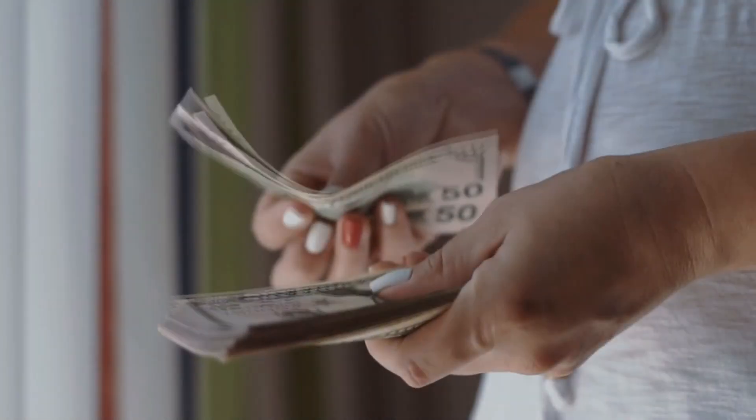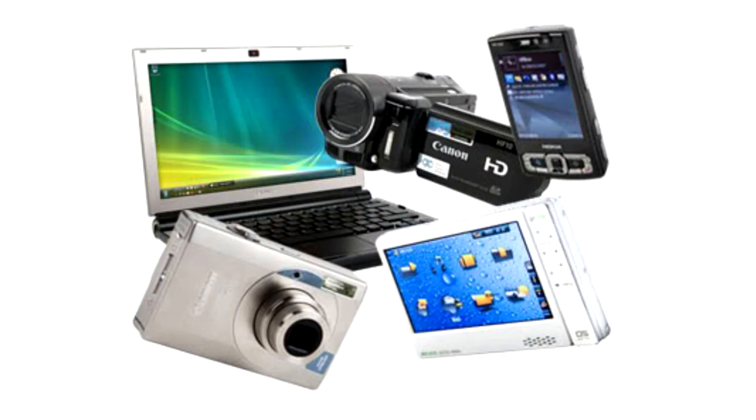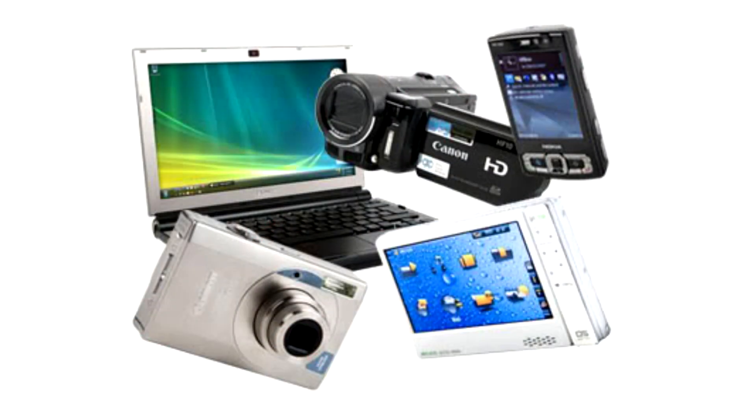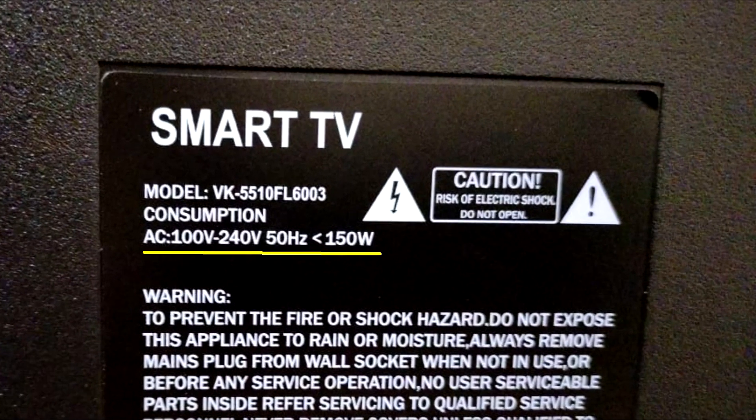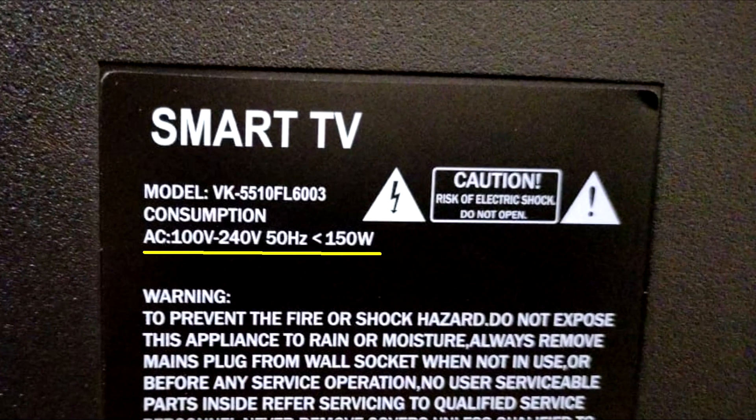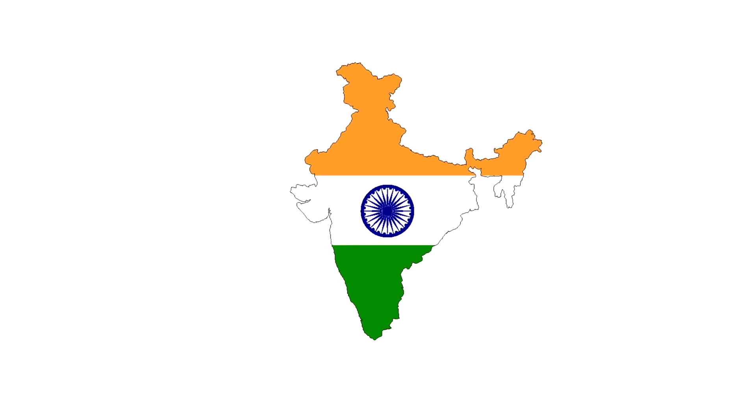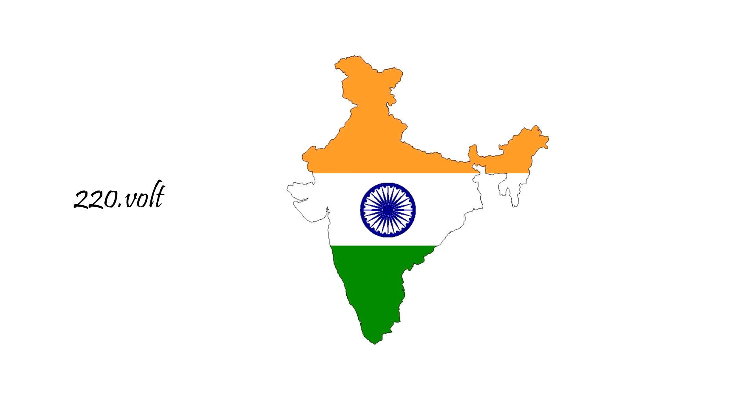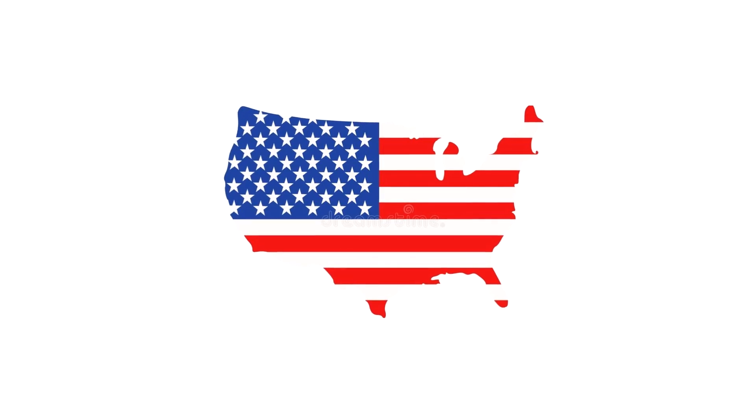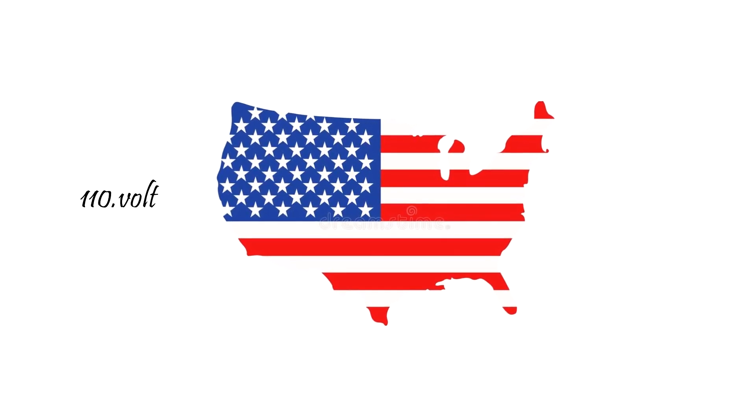Whenever we consider purchasing an electrical or electronics item, we keep two things in mind: the voltage and wattage of the item. This tells us whether the item is suitable for use in our country. In India, electrical and electronics items are designed for 220 volts, while in America, they are designed for 110 volts.